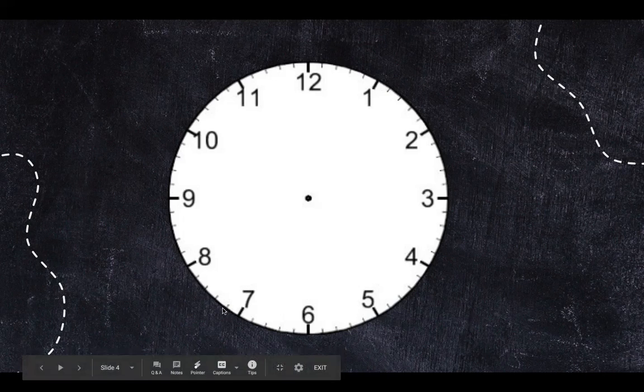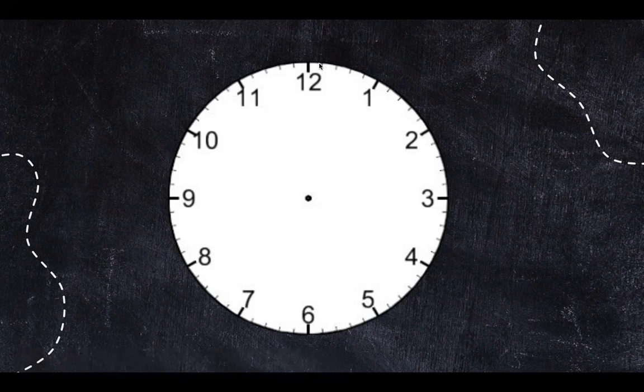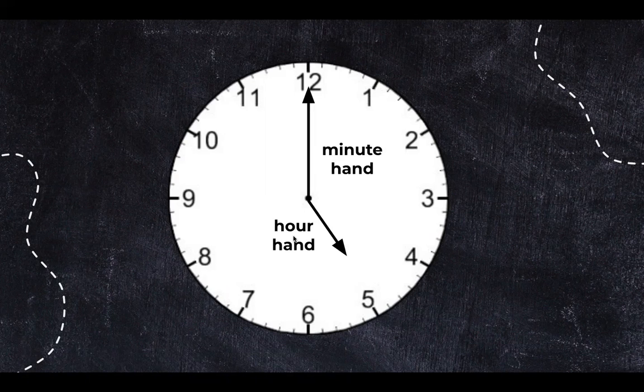These little lines around the clock help us tell time to the exact minute. But today we're gonna work on to the nearest five minutes. And this little dot in the middle is for our minute hand and our hour hand.